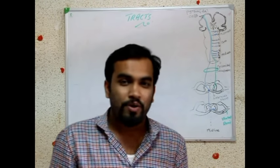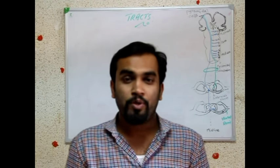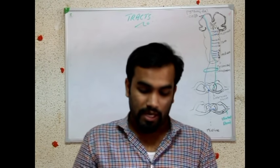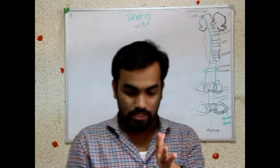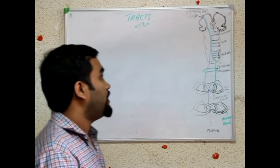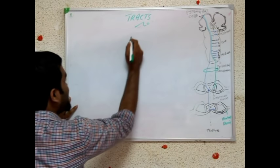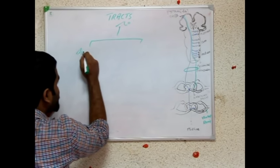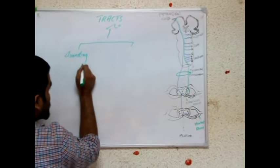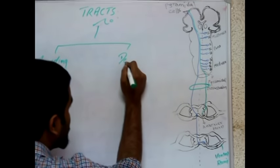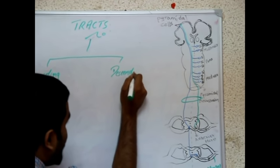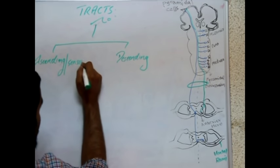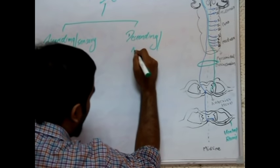Hello guys, today we are going to discuss a small topic from neuroanatomy — tracts. So let's start with tracts. We will start with the descending tracts. First of all, tracts are of two types: we have ascending tracts and descending tracts. Ascending tracts are sensory, and descending tracts are motor.